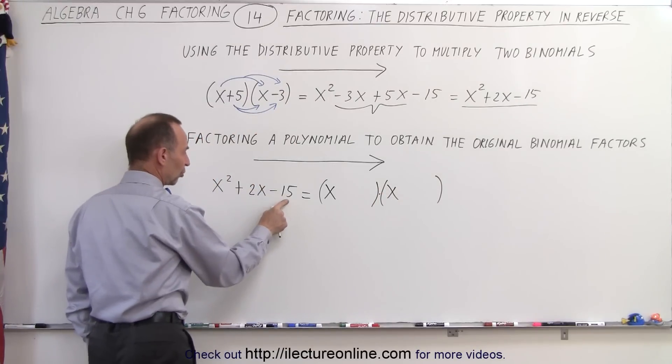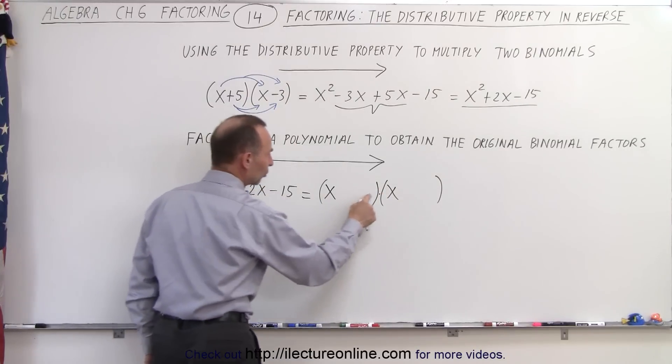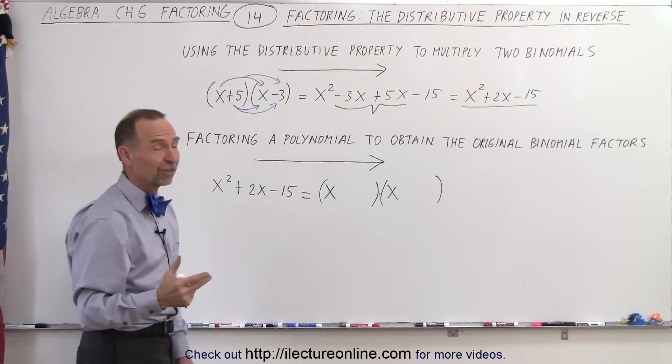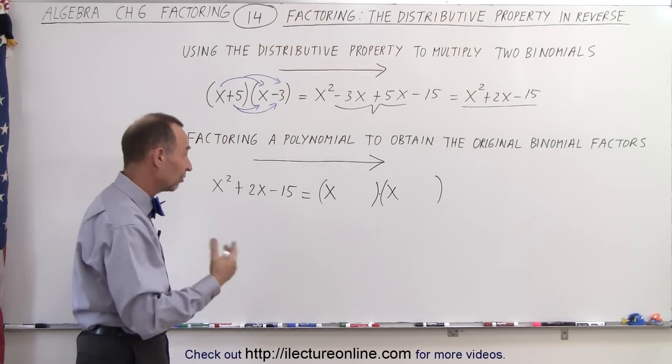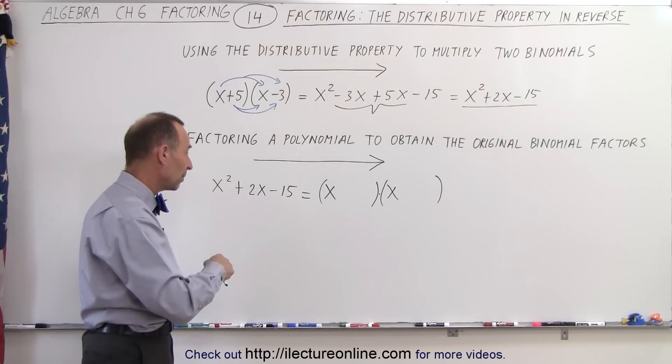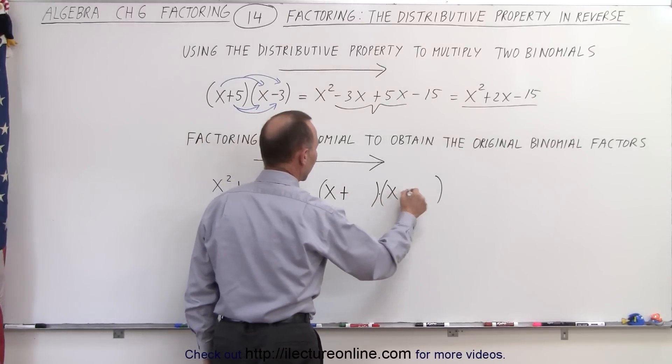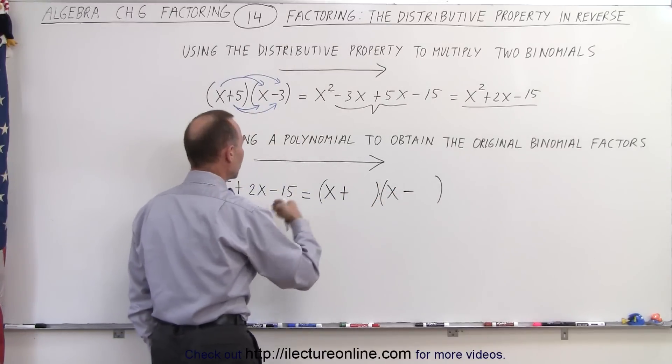To get the last term, that's going to be the product of the last two terms. So this times this will give us negative 15. For example, 5 and 3—that gives us 15, but one of them must be positive and one must be negative. So we have a plus and a minus.